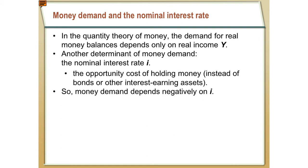Remember we talked about the relationship between velocity and money demand in the quantity theory, where money demand depended only on real income Y — we demanded a fraction K of our income to be held as money. But that's not realistic because the nominal interest rate I plays a key role in money demand. If the nominal interest rate is high, there's a large opportunity cost of holding money. If you keep it under the mattress, you're not earning interest; you could put it in the bank and earn the nominal interest rate.